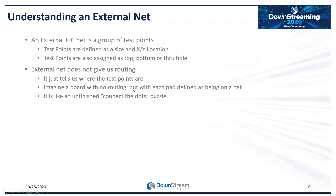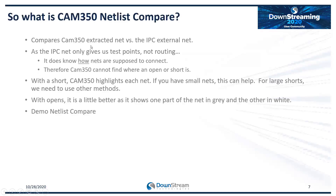Even with ODB++ or IPC 2581, you want to extract a netlist when you do a compare. The external IPC net is a group of test points — a test point is defined by size and an XY location, and assigned as top, bottom, or through hole, but that's it. There's no routing information in the external netlist telling us how to get from one point of a net to another. When doing netlist compare, we can't validate whether a particular trace or piece of copper is correct unless it's one of those test points.